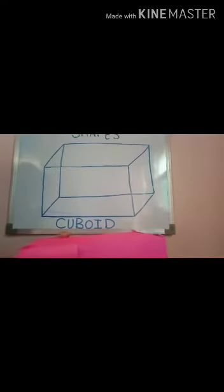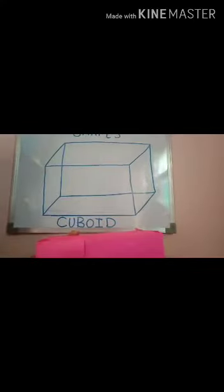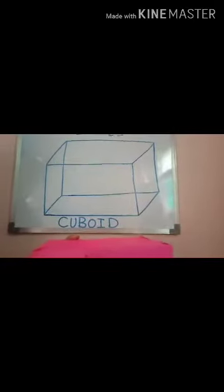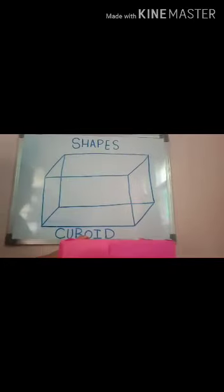A cuboid has 12 edges. How many edges? Twelve edges. Let's count: one, two, three, four, five, six, seven, eight, nine, ten, eleven, twelve.